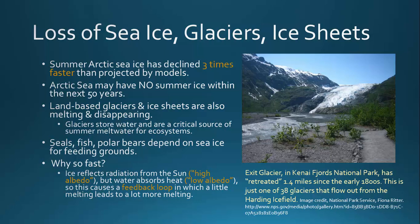Ice reflects radiation from the sun — it has a high albedo — but water, rock, and vegetation absorb heat, giving them a low albedo. This causes a feedback loop: as more ice melts, more surfaces are exposed that absorb more heat, leading to even faster melting of the ice. This shift in albedo was not fully accounted for in the original models, which is why melting is happening faster than originally predicted.